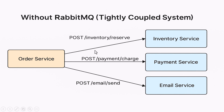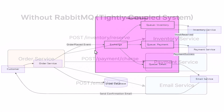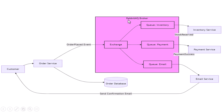This is where RabbitMQ comes in. RabbitMQ is what we call a message broker — it sits between your services and helps them communicate through messages, not direct calls. The key to how RabbitMQ works is something called an exchange. Instead of sending messages directly to queues, producers like the order service send messages to an exchange. The exchange then routes those messages to one or more queues based on predefined rules.